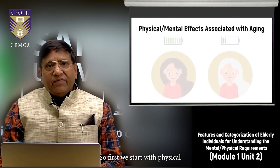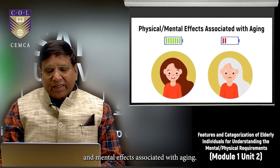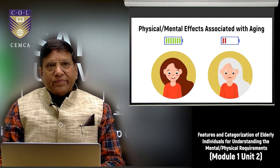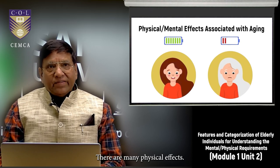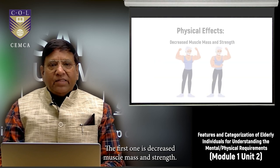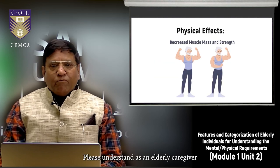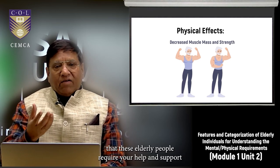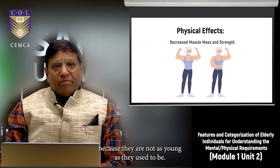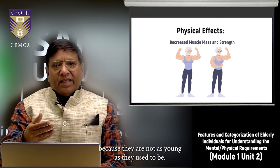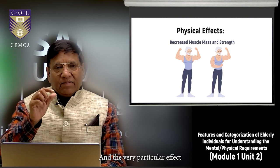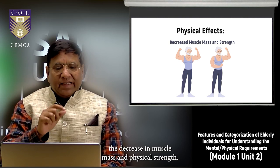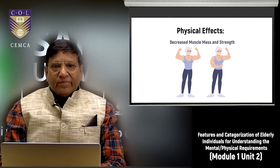We start with physical and mental effects associated with aging. The first physical effect is decreased muscle mass and strength. As an elderly caregiver, understand that these elderly people require your help and support because they are not as young as they used to be, and decreased muscle mass is a very particular effect of old age.